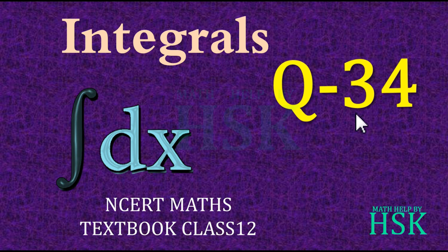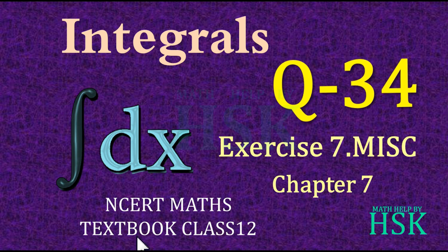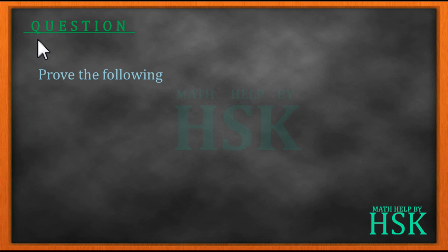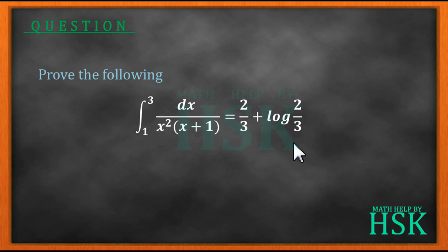Hello friends, in this video I am going to take question number 34 of the miscellaneous exercise of chapter 7 of NCERT maths textbook of class 12. The question is to prove that the integral of dx upon x squared into x plus 1, from the limit 1 to 3, is equal to 2 upon 3 plus log of 2 upon 3.